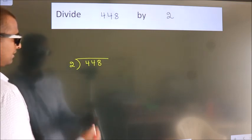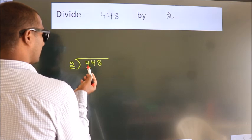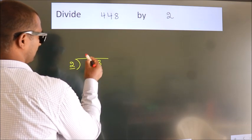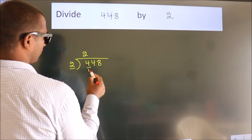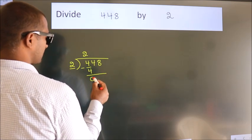Next. Here we have 4, here 2. When do we get 4? In 2 table. 2 2's 4. Now, we should subtract. We get 0.